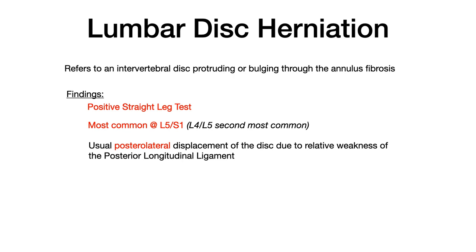Lumbar disc herniation refers to an intervertebral disc that protrudes or bulges through the annulus fibrosis. Findings include a positive straight leg test — at 30 degrees or beyond, radicular pain suggests nerve root involvement consistent with a herniated disc. The most common site for lumbar disc herniation is L5-S1, affecting the S1 nerve root. The second most common area is L4-L5, pushing on the L5 nerve root. These areas incur the greatest burden of force through the lumbar spine biomechanics.